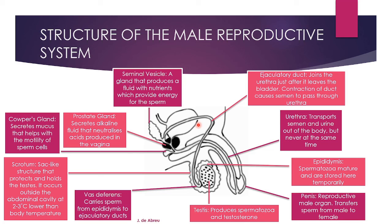Then we get to the structure of the male reproductive system. Starting on the outside and working inward: the scrotum is a sac-like structure that protects and holds the testes. It occurs outside of the abdominal cavity at 2 to 3 degrees Celsius lower than body temperature, because there are enzymes on the sperm cells in the testes that can denature at too high a temperature.